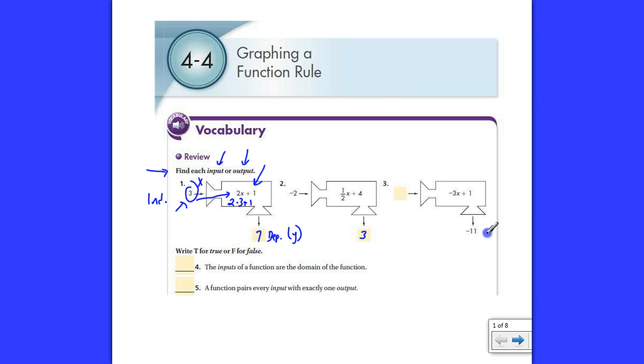And number 3 is an interesting one here, because here they told you what the dependent variable was. They told you what the output is, or y. So you can think of it like this, that negative 11, that y, the output, is equal to negative 3x plus 1. So if you think about that for a moment, you might realize you're going to have to solve an equation here.